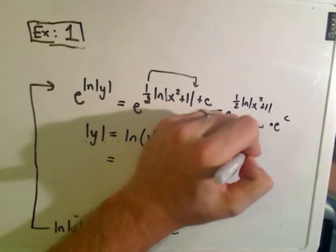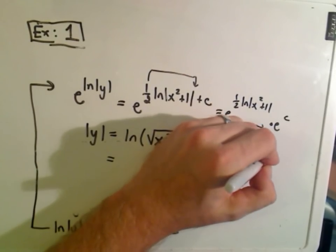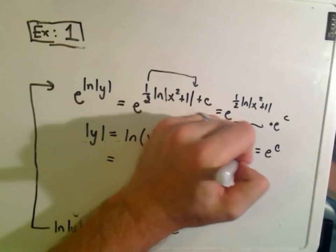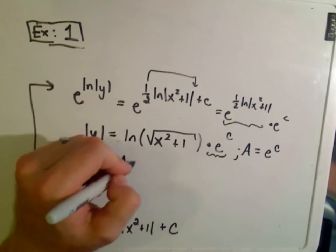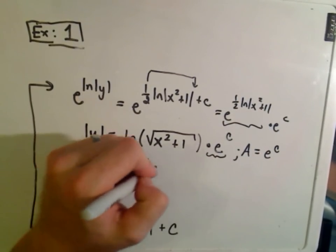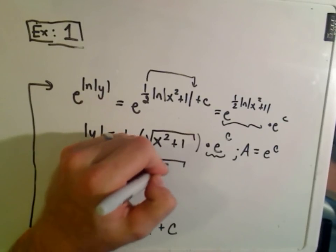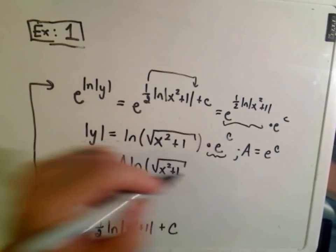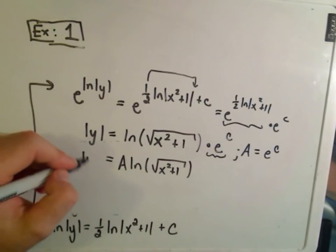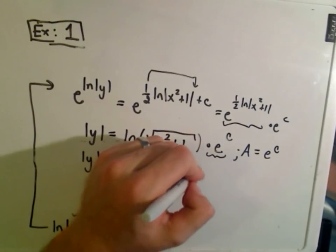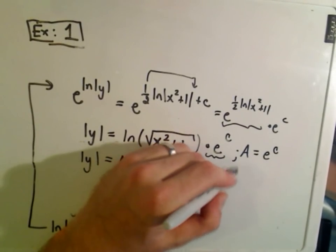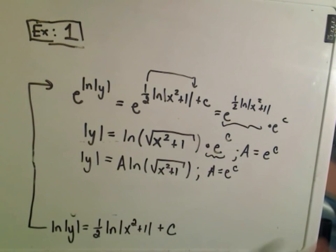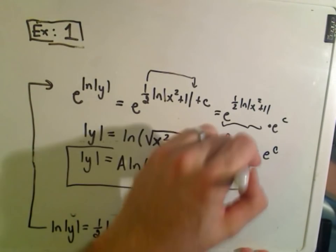A lot of times, I don't know, books will always replace this. They'll say let a equal e to the c. So that your final answer is some number a times the natural logarithm of the square root of x squared plus 1. Absolute value of y. Where a equals e to the c. Alright, and that would be your solution in this case.